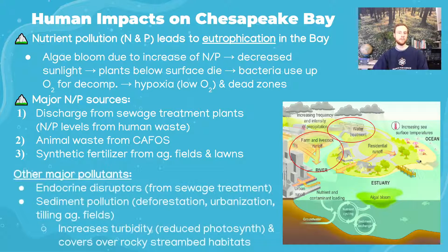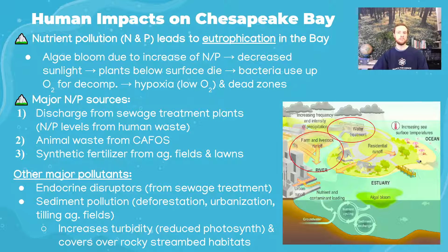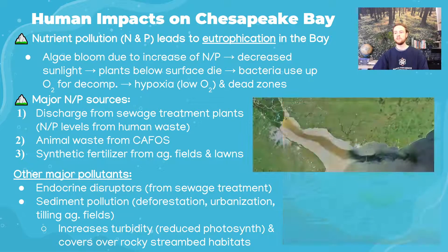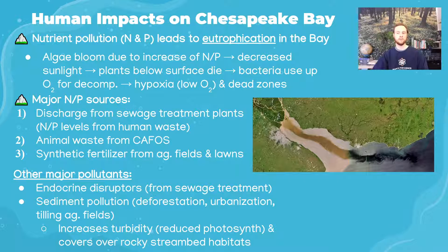Other pollutants include endocrine disruptors — medications that pass through people's bodies, reach wastewater treatment plants, and aren't fully removed. There's also sediment pollution: clear-cutting, urbanization, and farming all loosen sediments, making them more easily carried into rivers. An aerial image can show dramatically how different the water's color becomes due to sediment, which decreases photosynthesis rates and warms the water because sediment-laden water has lower albedo and absorbs more sunlight.